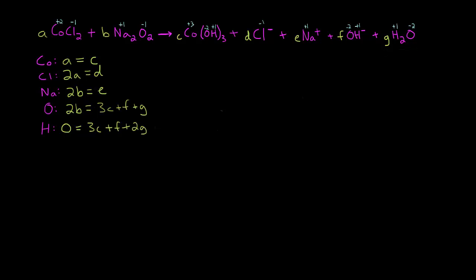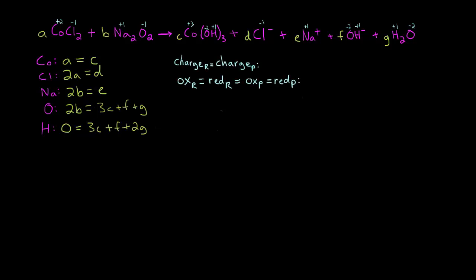Now we're going to generate some new equations. We'll start with: charge on the reactant side equals charge on the product side; and oxidation on the reactant side equals reduction on the reactant side equals oxidation on the product side equals reduction on the product side. That gives us six total permutations, essentially generating seven new equations, putting a lot of restraints on our system.